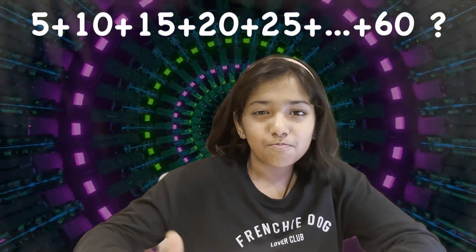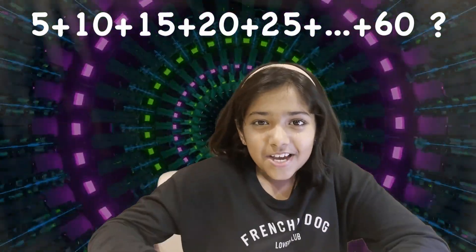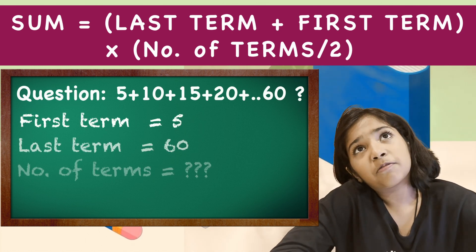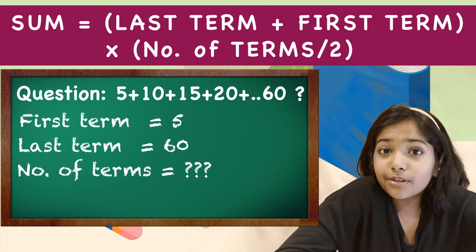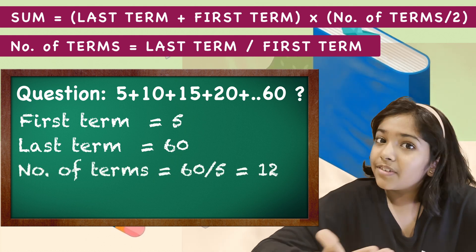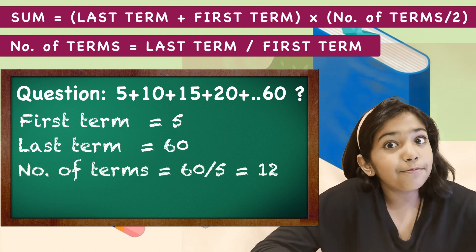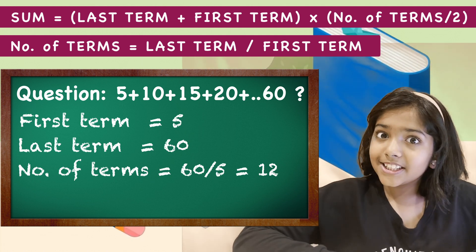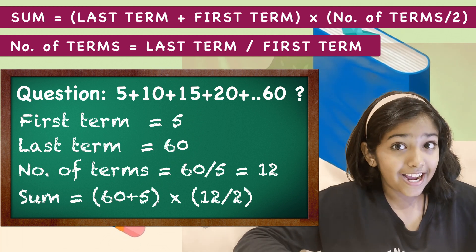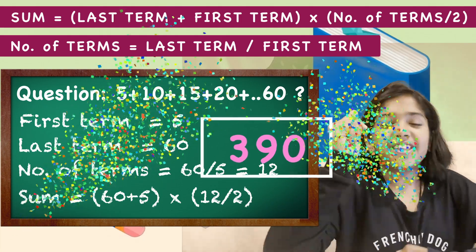What is 5 plus 10 plus 15 plus 20 plus 25 plus 30 plus 35 plus 40 plus 45 plus 50 plus 55 plus 60? Wow, this is too complicated. But it's actually really simple too. The first term is 5, the last term is 60. But the number of terms — I don't think I know the number of terms, but we have a formula for that too. All we have to do is 60 divided by 5; we get the number of terms as 12. Now we just have to do the formula. So the answer is 60 plus 5, multiplied by 12, divided by 2. We get the answer as 390!